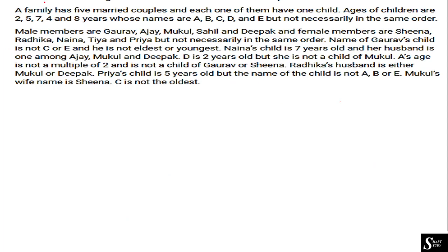As you can see, the question here is: a family has five married couples and each one of them has one child. Five married couples means a total of 10 persons, and those 10 persons have five children — each of the five married couples has one child.